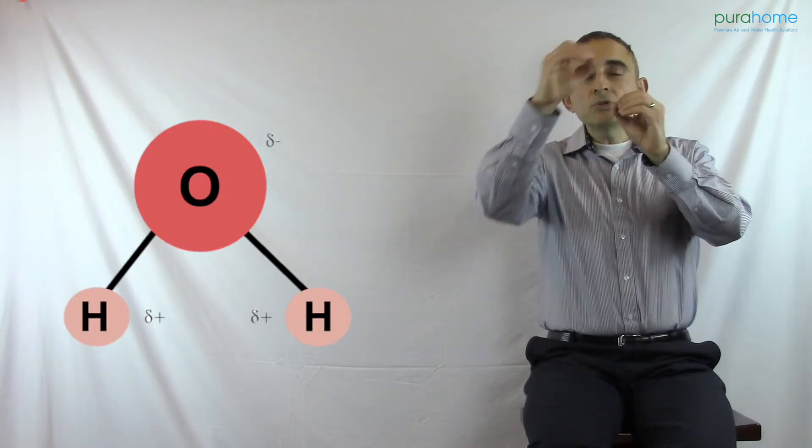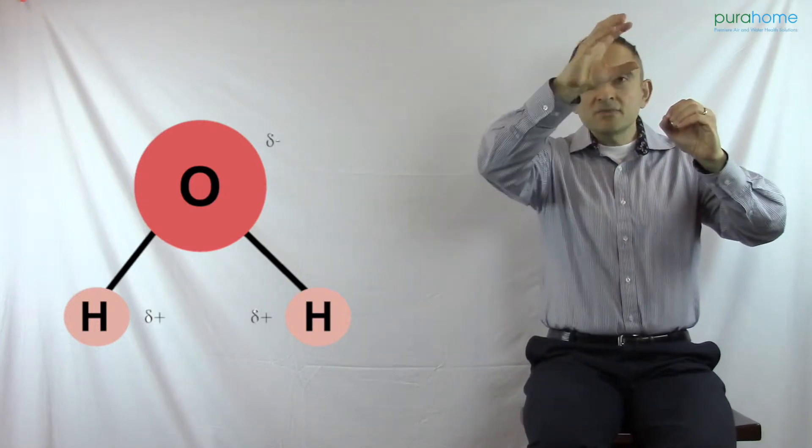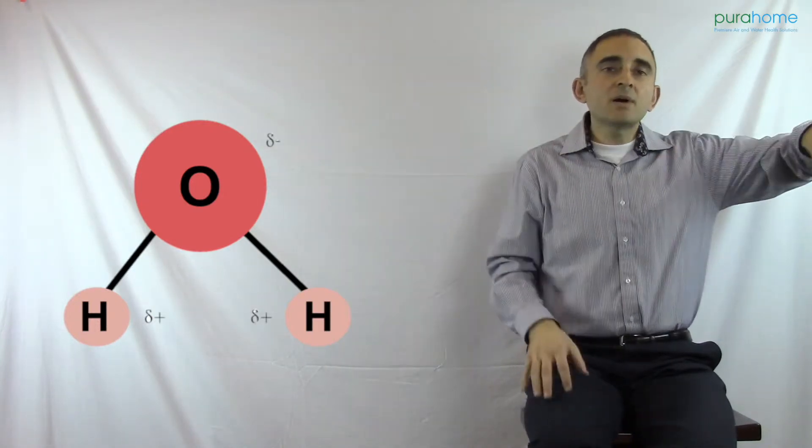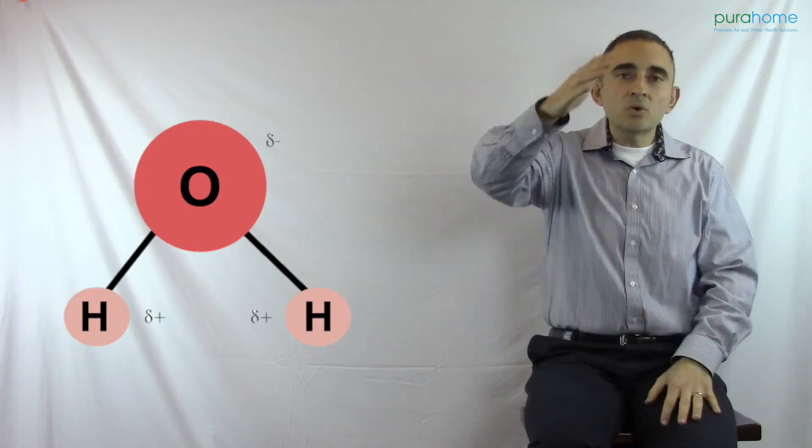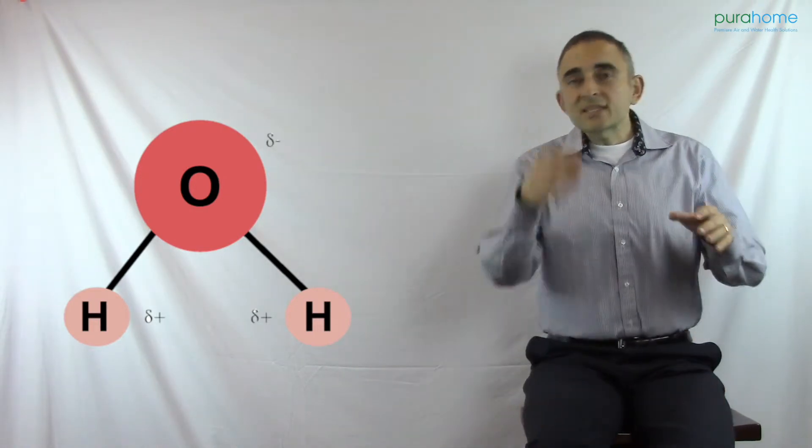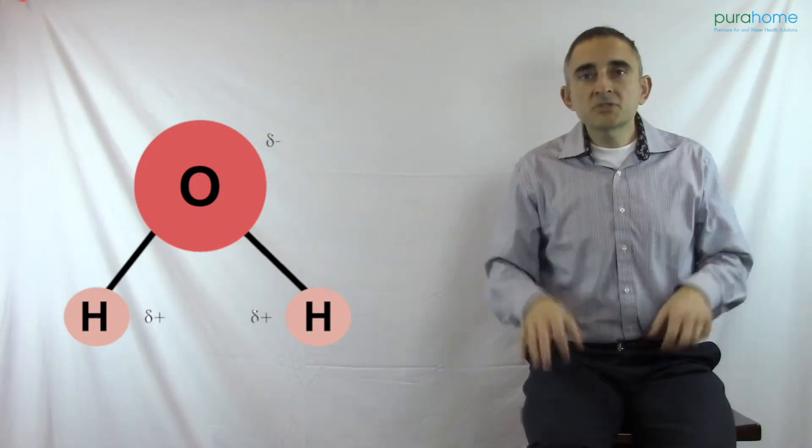Well, ionizers use electricity to split water, H2O, into an H positive and an OH negative. H positive creates an acid solution, OH negative, an alkaline solution. That's one way to get ionized water.